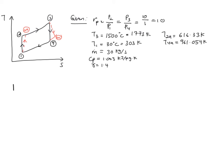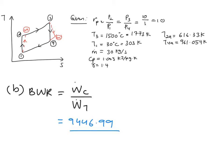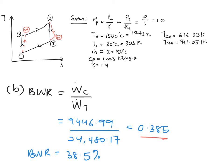Next is to find your back work ratio, which is defined as your compressor work divided by turbine work — values you have already calculated. Plugging in compressor work over turbine work, this is equal to 0.385, or 38.5%. This means that 38.5% of the turbine output is used to drive your compressor.